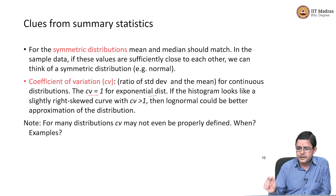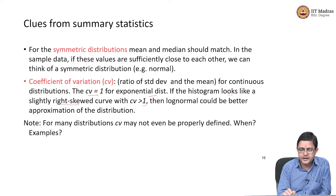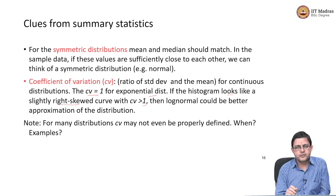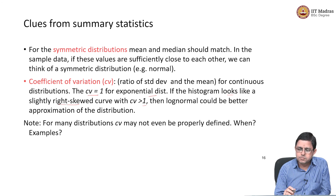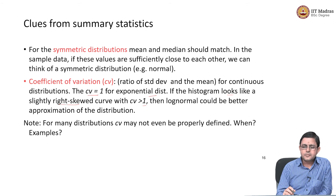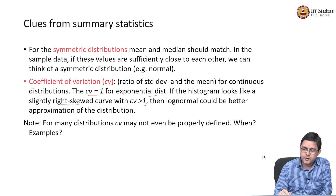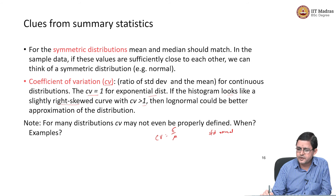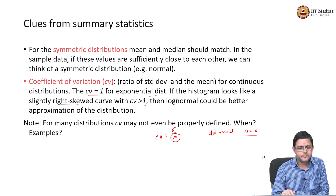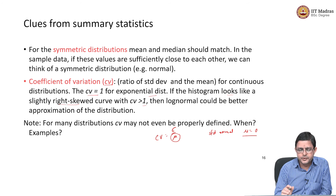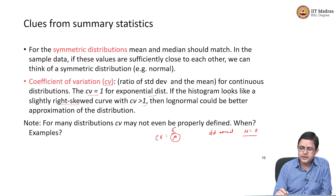If the histogram looks slightly right skewed with Cv greater than 1, log normal distribution may be a better approximation. For some distributions, Cv is not even useful — for example, the standard normal distribution has mu equal to 0, so Cv may not even be defined. So note that using Cv may give us clues, but this is not a tell-all. It gives us clues, and sometimes it may not even be available.